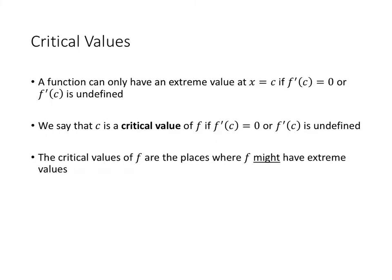Let's think about why this is. Why does the derivative have to be 0 or undefined? Consider a minimum: the function was going down for a while and then started going back up. One way that can happen is if the function levels out and has a slope of 0 — a horizontal tangent line, which means the derivative is 0. Another way is if the function is going down and then suddenly starts going back up without leveling out; at a point like that, the derivative would be undefined. Those are the two ways we could have a minimum value, and the same is true for a maximum.